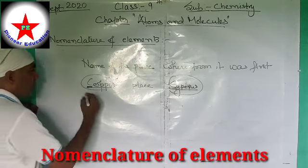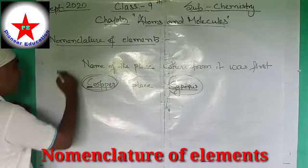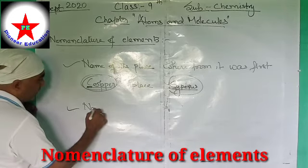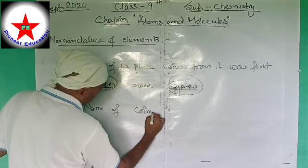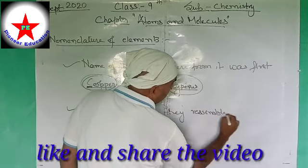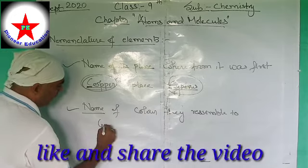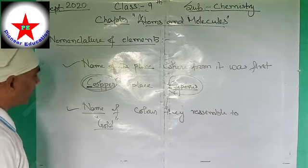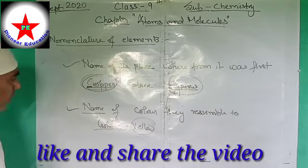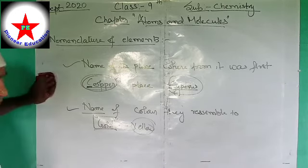Similarly, many other elements were named after the places where they were obtained. Another basis for naming was the color the element resembles or looks like. For example, gold appears yellow in color, and since gold resembles the color yellow, its name was associated with that color. This naming convention was considered for a long time.